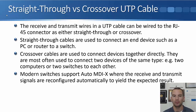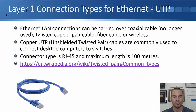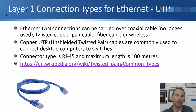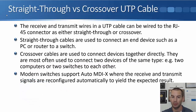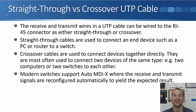Copper cables can be either straight-through or crossover UTP cables. The receive and transmit wires can be wired to the RJ45 connector as either straight-through or crossover. On the end of the cable, that's the RJ45 connector, and there are individual receive and transmit wires in there. Straight-through cables are used to connect an end device like a PC or a router to a switch — they're more commonly used. Crossover cables are used to connect devices together directly, most often devices of the same type, such as two computers to each other or two switches to each other.